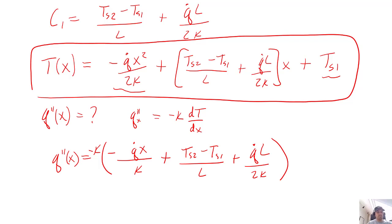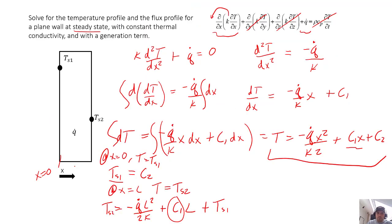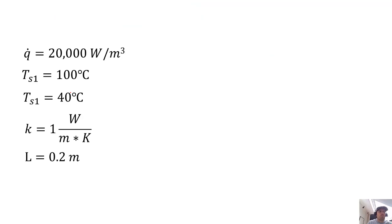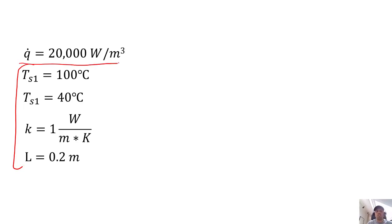So our flux in the x direction as a function of x equals minus k times that derivative. I took the liberty of graphing both equations in Excel. Before, when we had no generation, we got just a straight line and the flux was constant. Now our temperature profile is quadratic, so we expect curvature. I plugged in all of the constants — including a generation term of 20,000 watts per cubic meter — so we can plot these results.